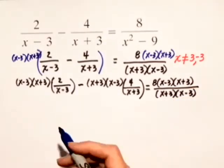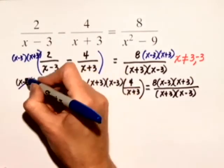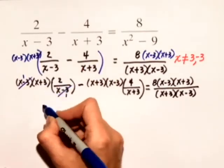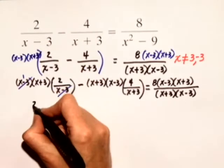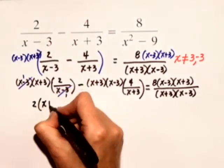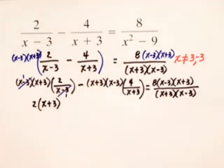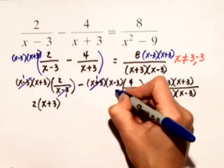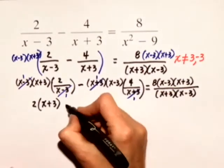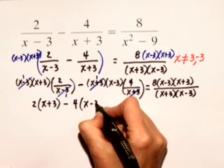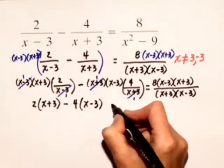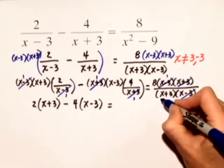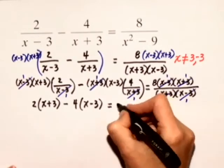Now we're going to see some factors divide out. x minus 3 divided by x minus 3 divides out, and we have x plus 3 times 2. I'm going to write the 2 in front of the x plus 3 since multiplication is commutative, the order does not matter. So we have 2 times the quantity x plus 3 minus, in our second term, the x plus 3 over x plus 3 will divide out, and we have minus 4 times the quantity x minus 3 equals, on the right-hand side, notice the x minus 3 divides out, and so does the x plus 3, and we're left with just 8.